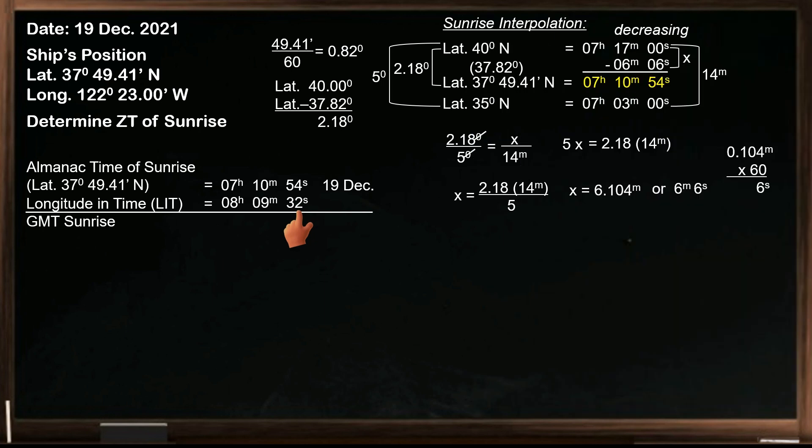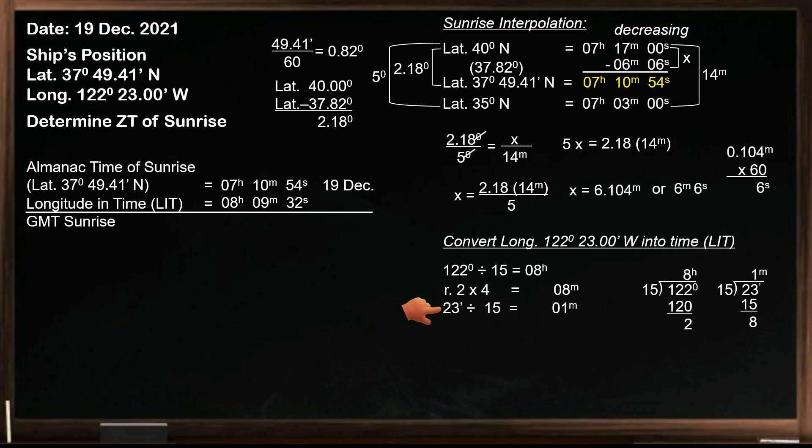If you do not have a calculator or conversion table, then you need to convert it manually. Divide 122 degrees by 15, the quotient will be in hours. When dividing manually, use the long method because we need the remainder. The remainder will be multiplied by 4, and the product will be in minutes. Next, divide 23 minutes of an arc by 15, the quotient is in minutes of time, then multiply the remainder by 4 to obtain seconds of time. The longitude in time is 08 hours 09 minutes and 32 seconds.